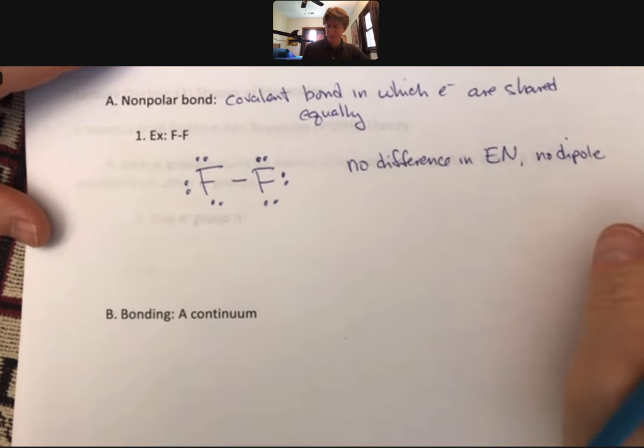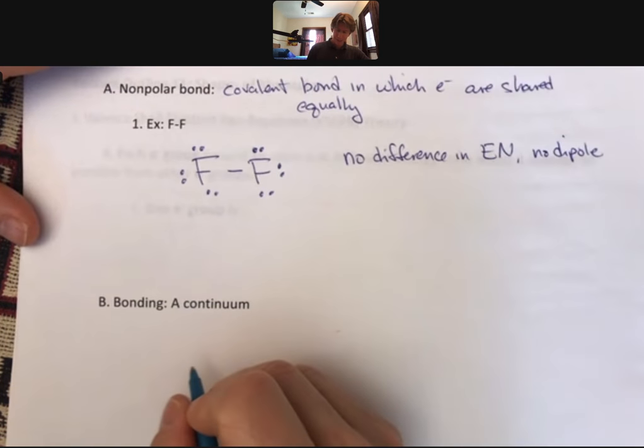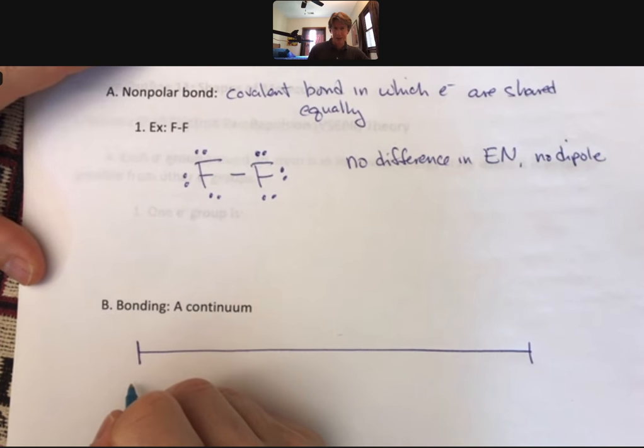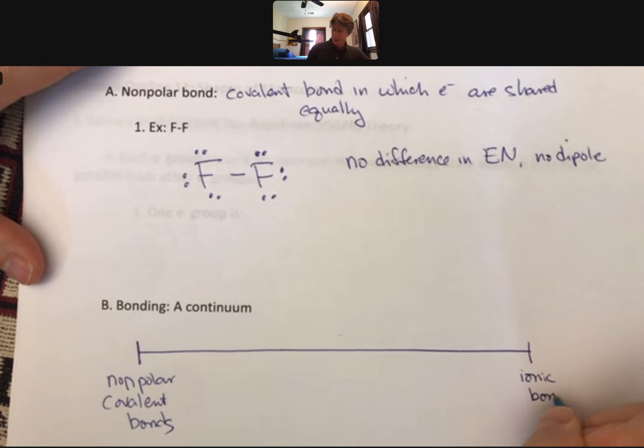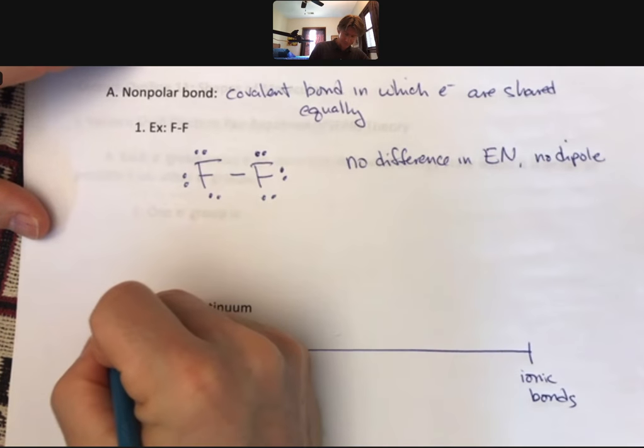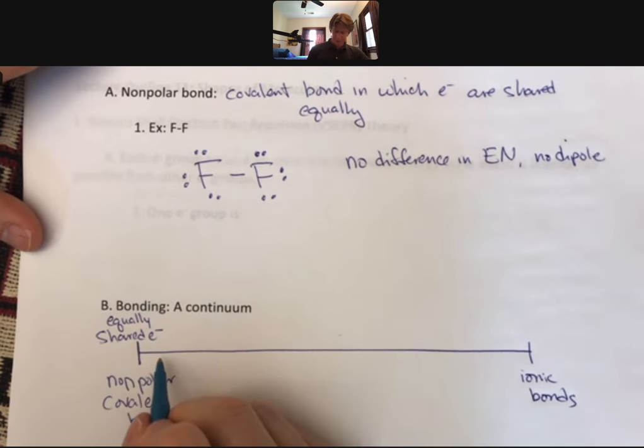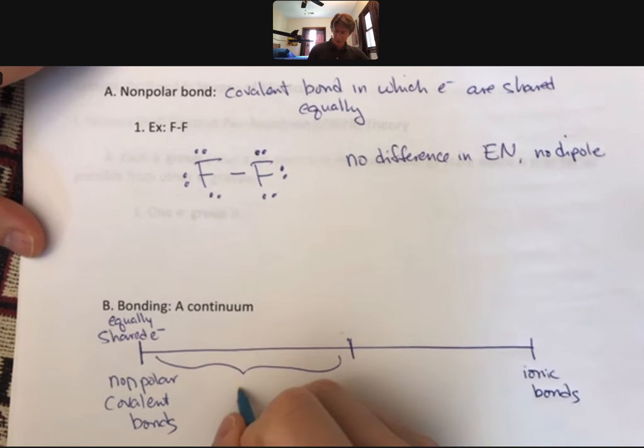We'll come back to dipoles in a little bit. But what I want to leave you with at the end of this lecture is that bonding is a continuum. On one end of that are nonpolar covalent bonds. And on the other end are ionic bonds. Nonpolar covalent bonds have equally shared electrons in the bond. And then as soon as there's a difference in electronegativity, you're going to get polar covalent bonds.